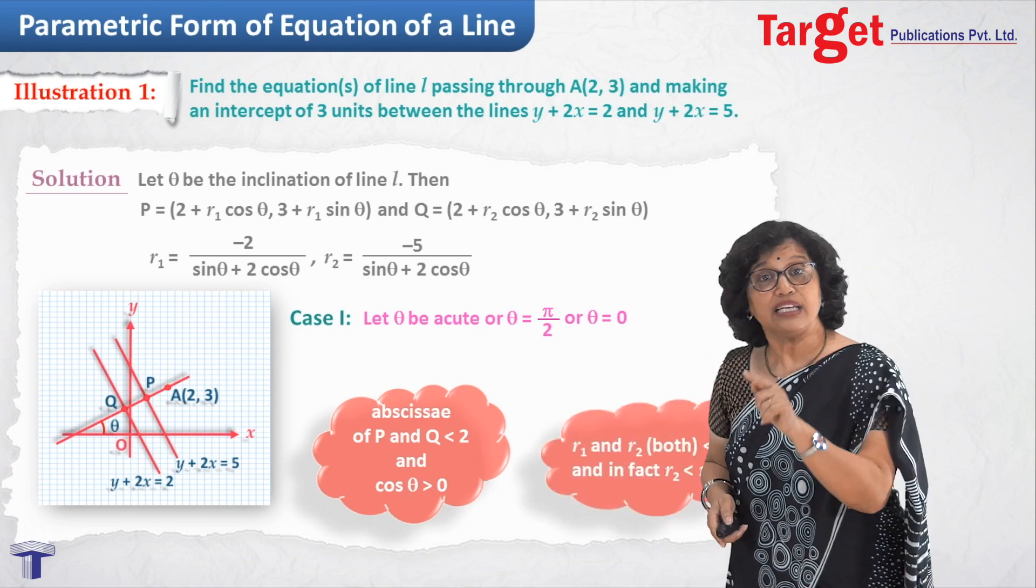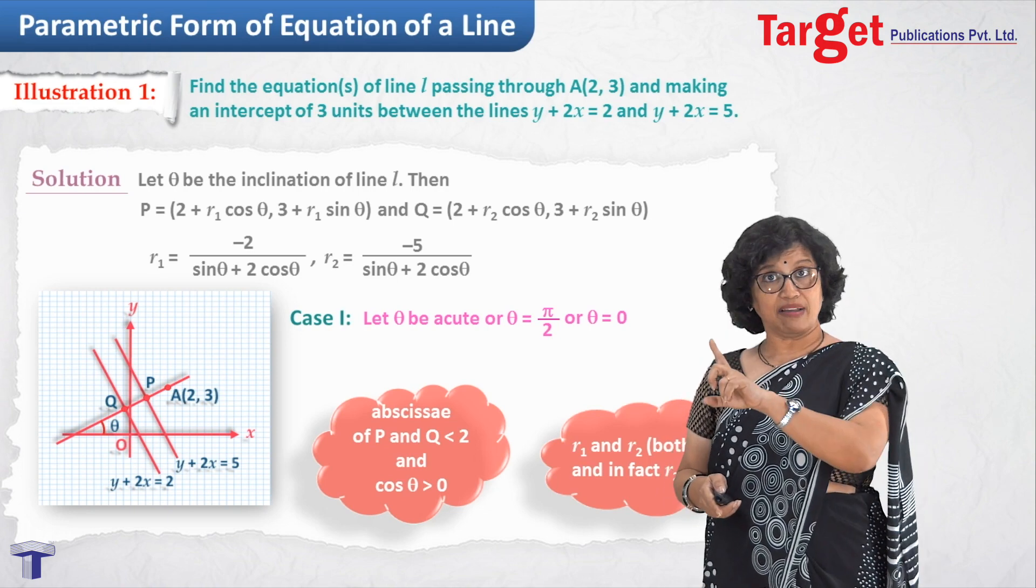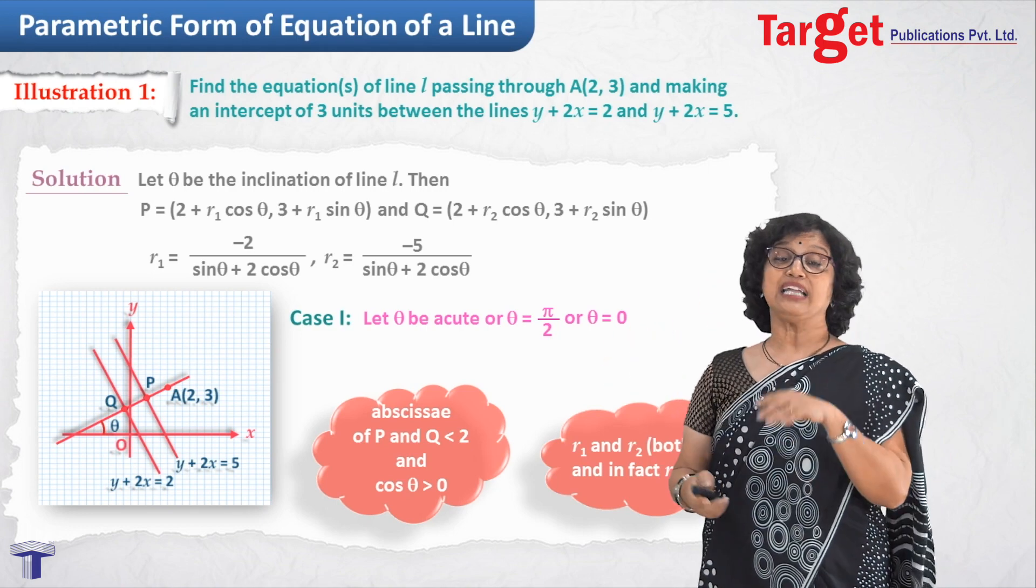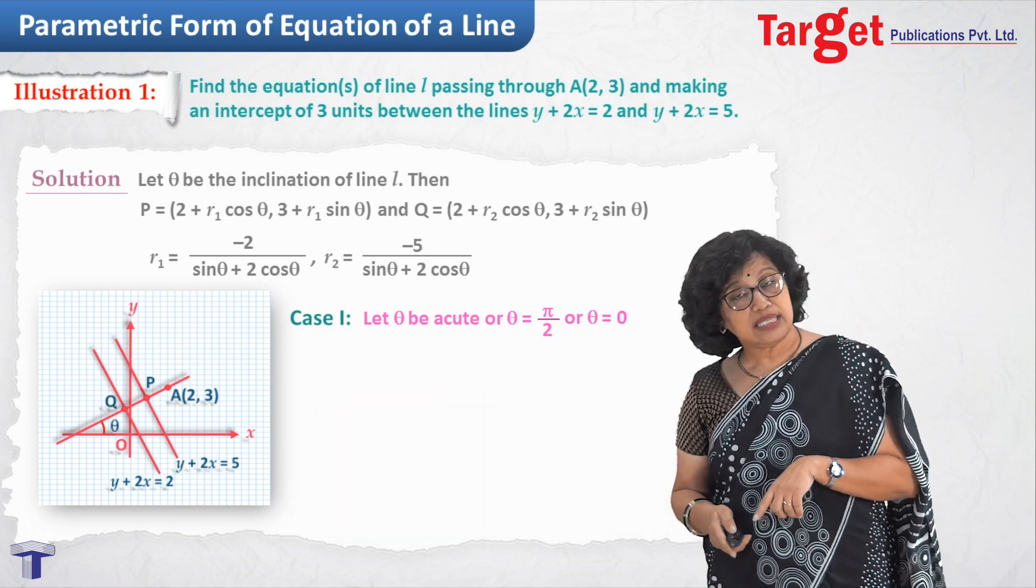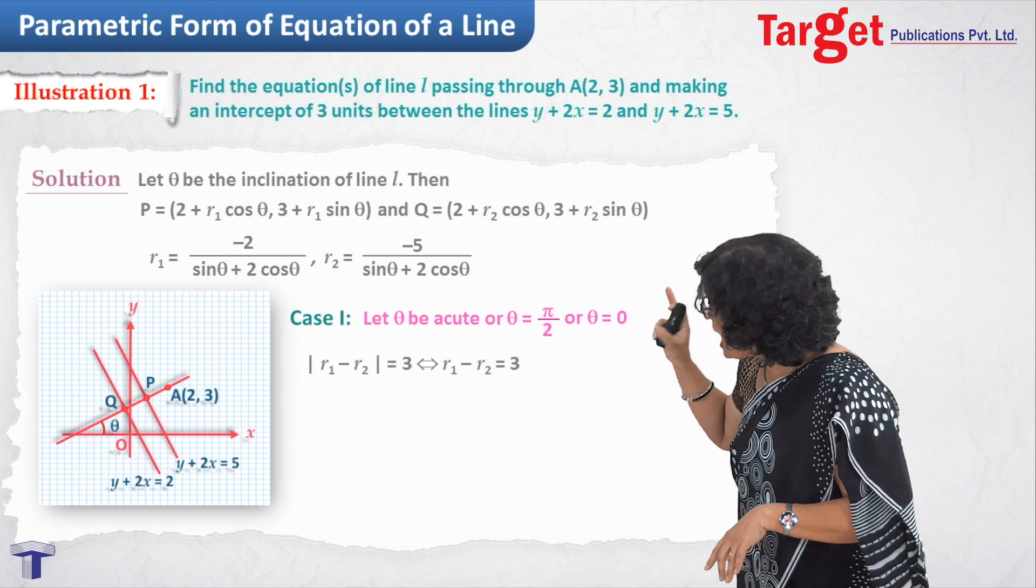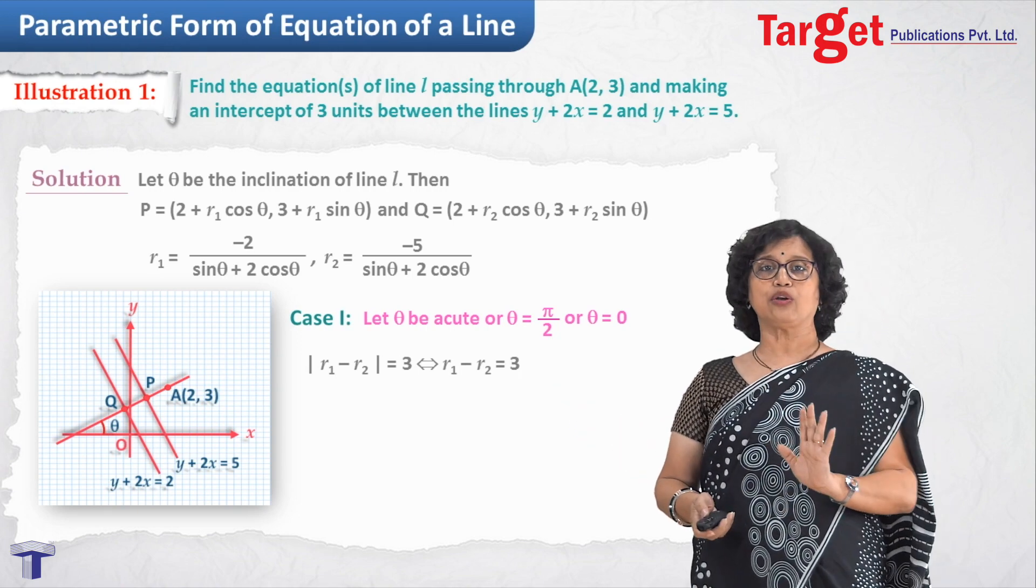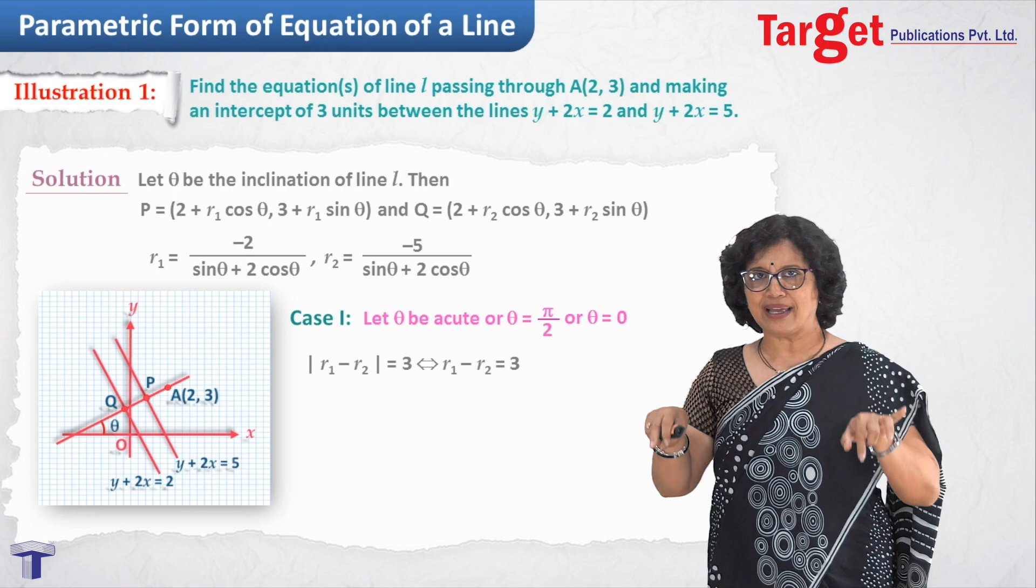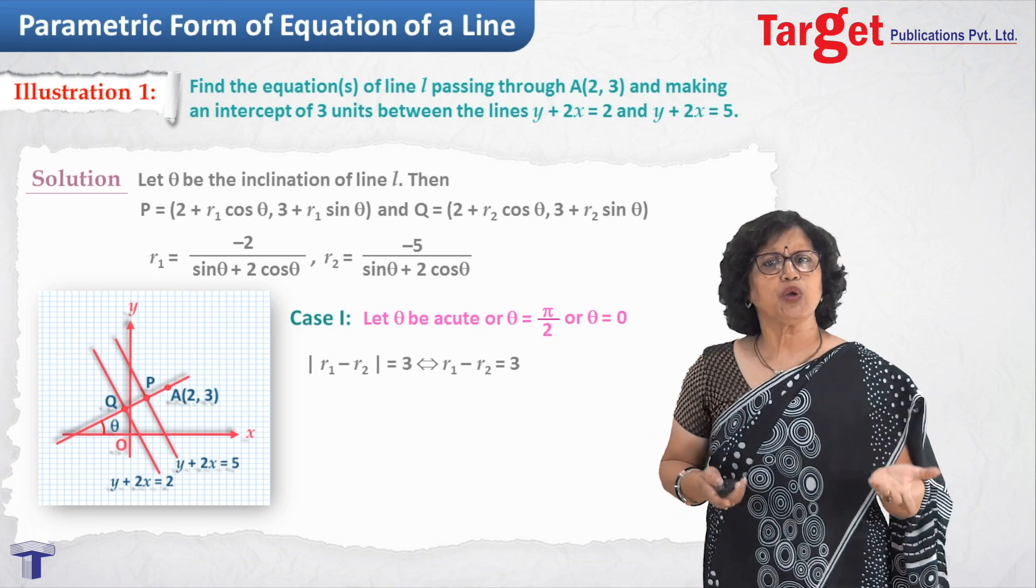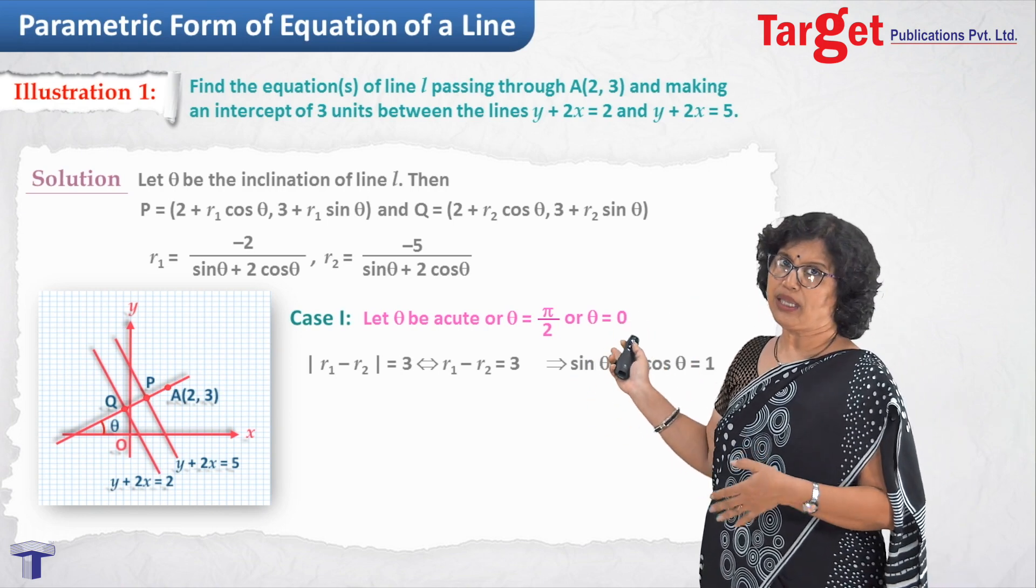And similar is with r2 also. r1 and r2, they have same sign. So r1 and r2 both are negative. And actually, you can write one more statement from there, see the picture, that r1 is greater than r2. And hence, my situation is now little simplified. I have absolute value of r1 minus r2 equal to 3, which would be rewritten now as r1 minus r2 equal to 3. Now, no more need of writing absolute value because r1 is greater than r2. Now, substitute expressions of r1 and r2 and simplify it. You will get sin theta plus 2 cos theta equal to 1.